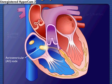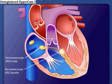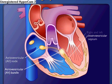Action potentials then pass rapidly along the atrioventricular bundle, which extends from the atrioventricular node through the fibrous skeleton into the interventricular septum. The atrioventricular bundle divides into right and left bundle branches.